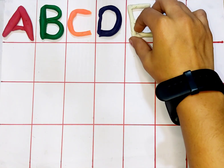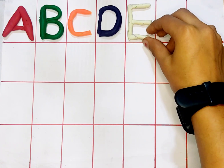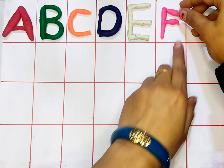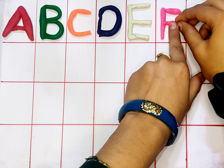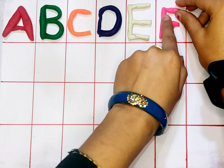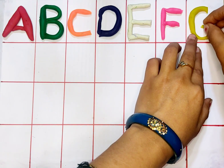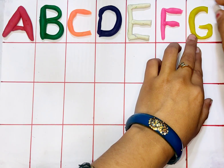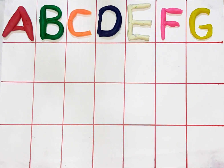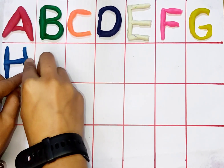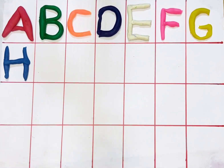E, E for elephant. F, F for face. G, G for goat. H, H for horse.